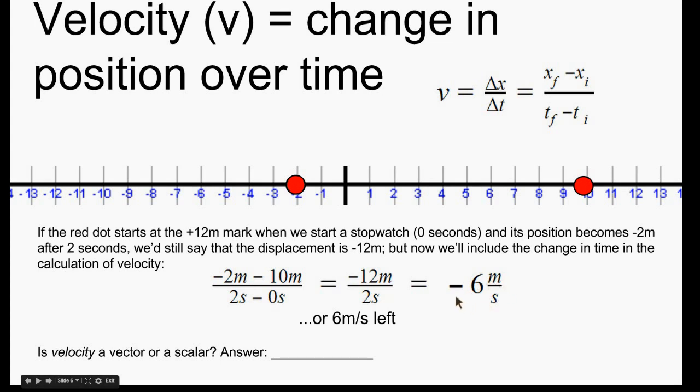And we're going to say that for this example, the velocity was negative 6 meters per second or 6 meters per second to the left. So velocity, in this case, is a vector because direction is important. We have to say to the left or we have to include the negative sign, which means to the left.